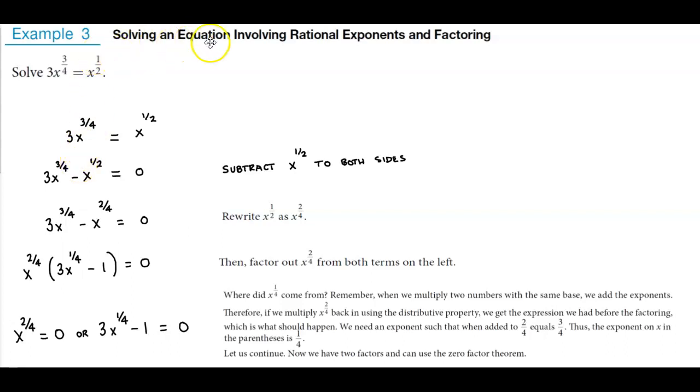Example 3, solving an equation involving rational exponents and factoring. We want to solve 3x to the 3 fourths which is equal to x to the 1 half.